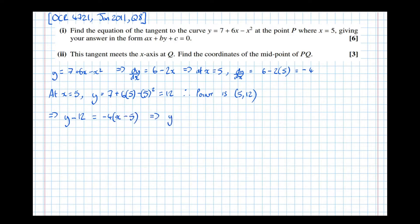And that implies that y minus 12 equals minus 4x plus 20. And getting it in the required form, that means that 4x plus y minus 32 equals 0.